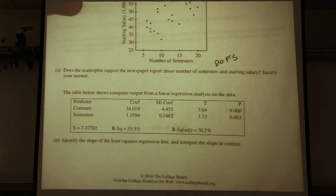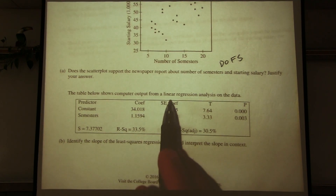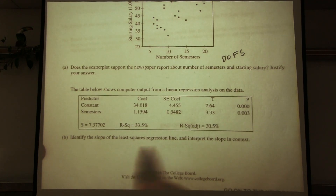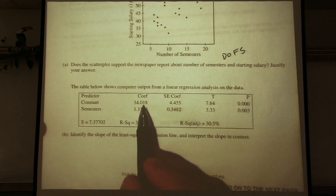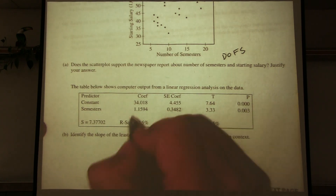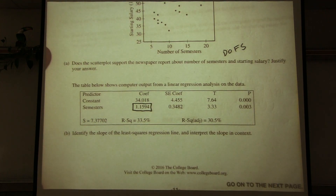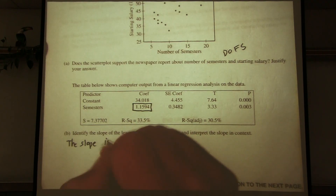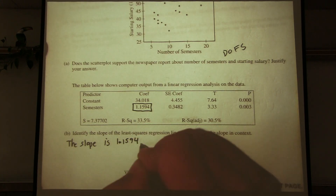Part B: the table shows computer output from a linear regression analysis on the data. Identify the slope of the least squares regression line and interpret the slope in context. The constant coefficient is the y-intercept, so the slope is the coefficient for the variable semesters. The slope is 1.1594.